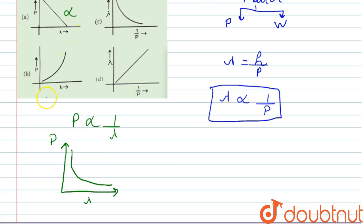We will check option number b. We are given the relation between p and lambda. This is also incorrect because the relation is like hyperbola.